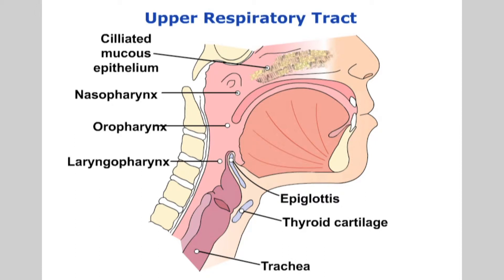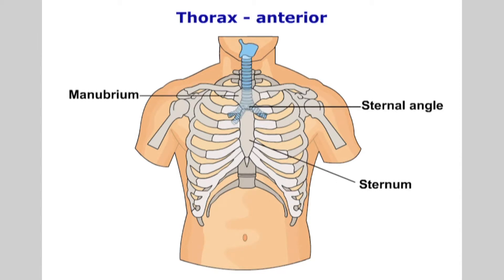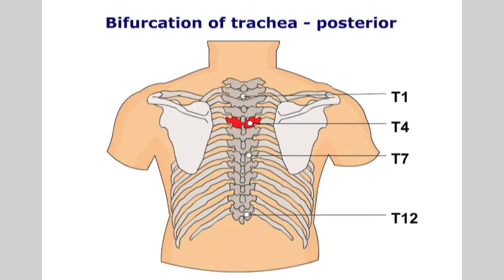After the larynx, we find the first section of the tracheal ring structure known as the cricoid cartilage. The rest of the trachea descends anterior to the esophagus until it bifurcates into the left and right primary bronchus. Anteriorly, the division takes place behind the sternal angle. Posteriorly, the division takes place at the level of the fourth thoracic vertebra.